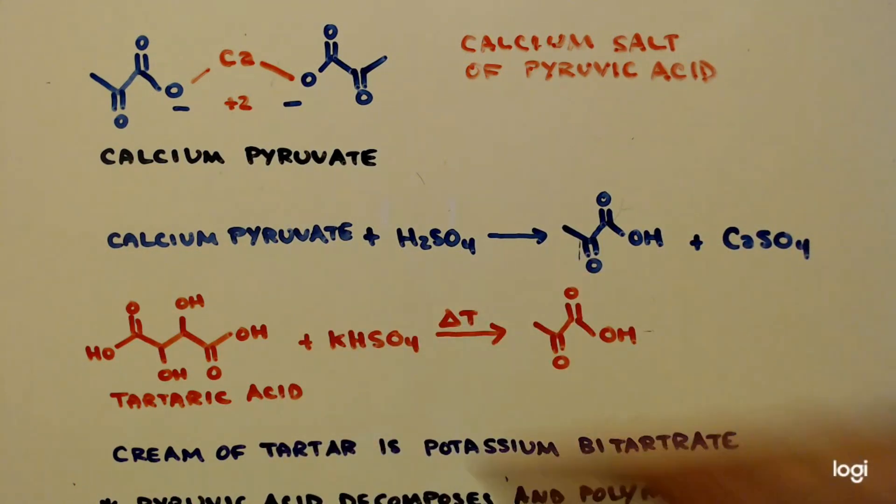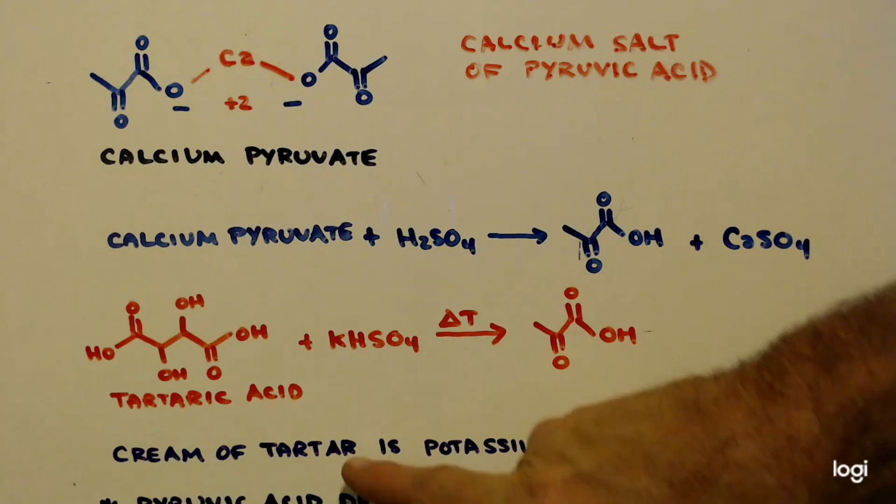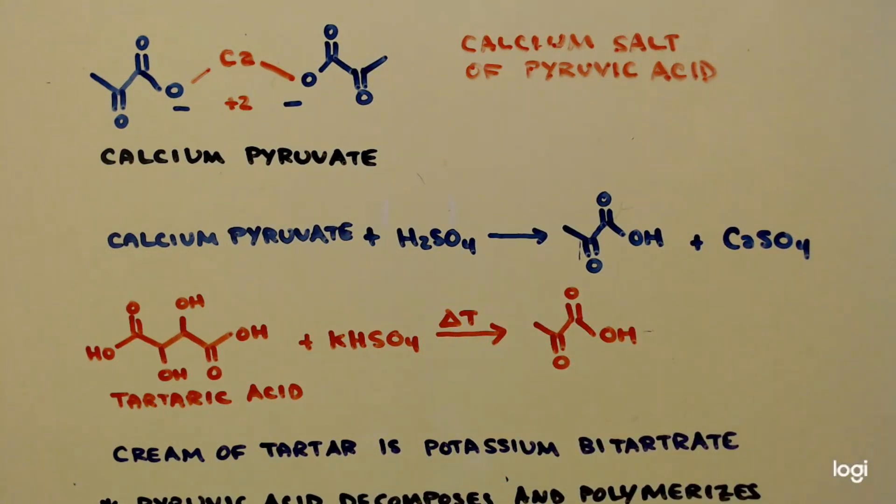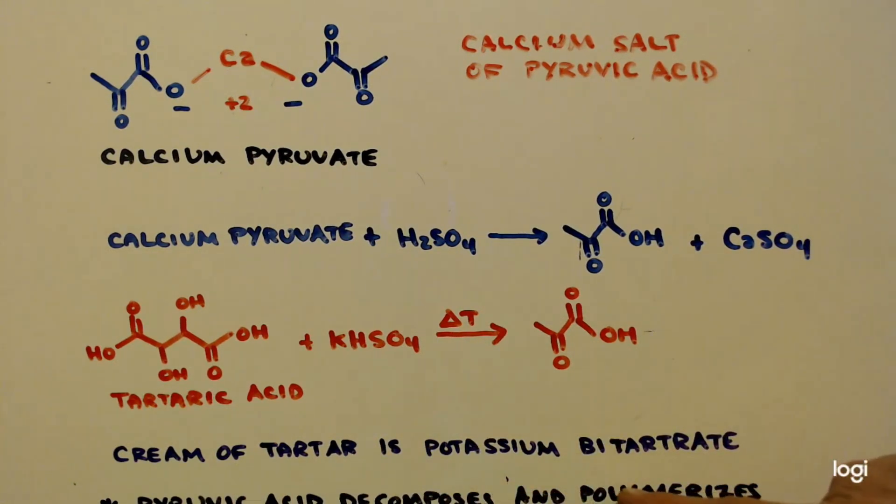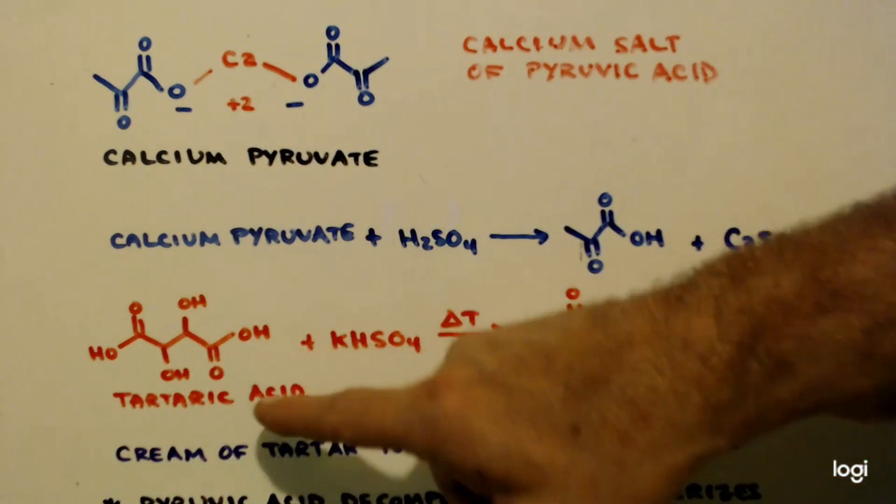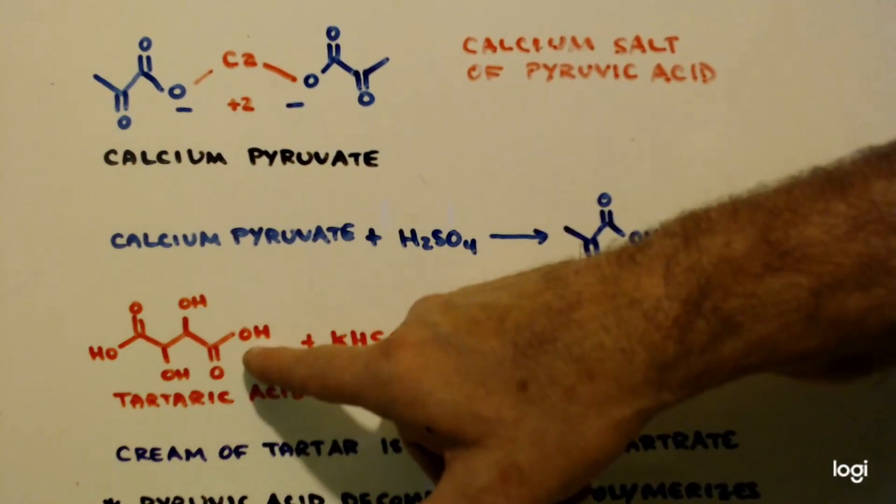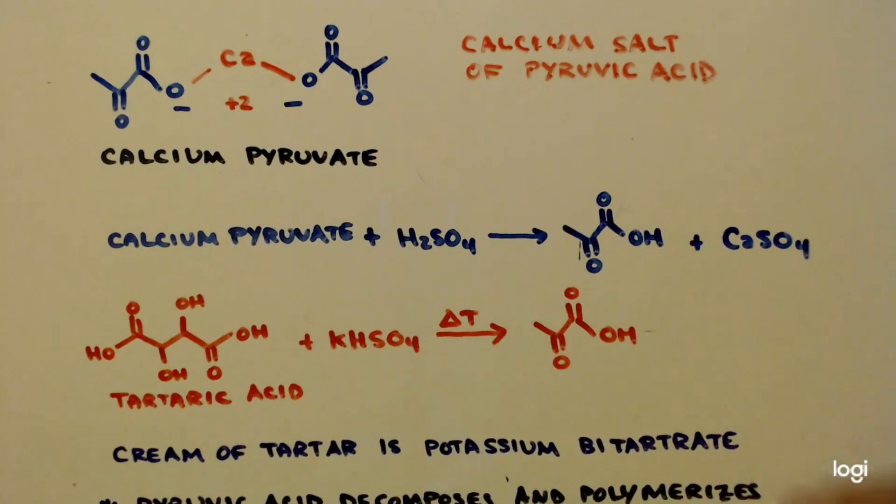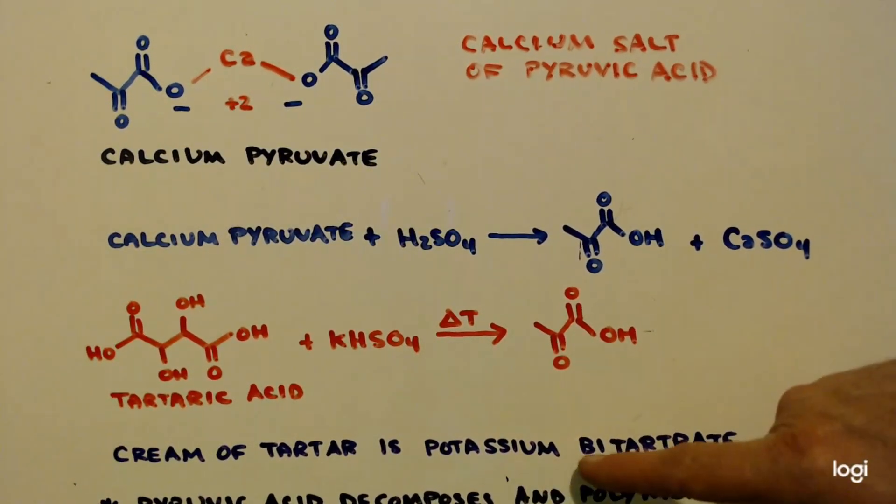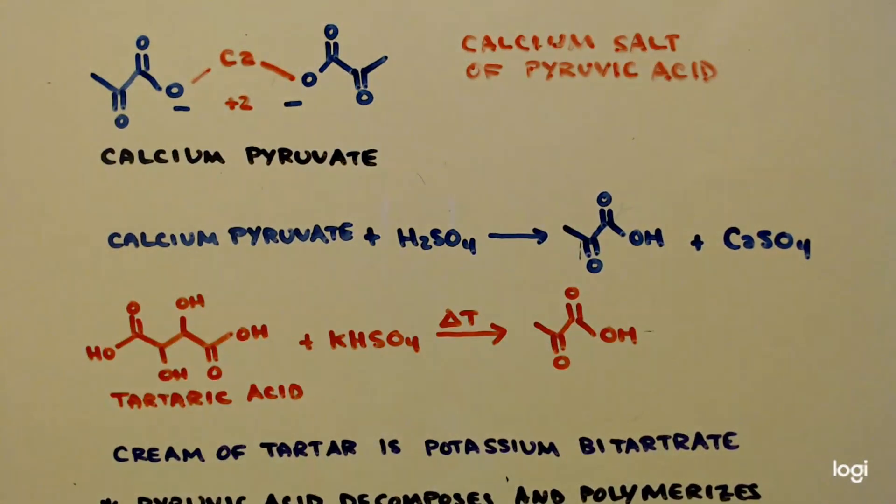How do I get tartaric acid? I actually did a video on tartaric acid. Basically, cream of tartar, which is something they use to put in food. You get it at the grocery store. Cream of tartar is potassium bitartrate, meaning it's the same exact thing as tartaric acid, except for one of the hydrogens on the carboxy group was replaced with potassium. And the bi means that the other one wasn't. So you've got two acids, two carboxy groups.